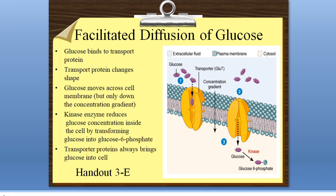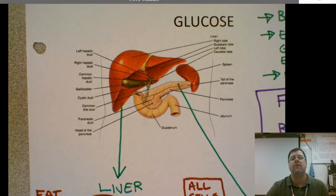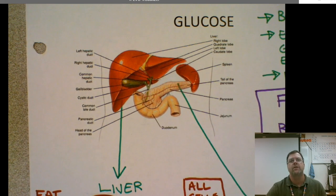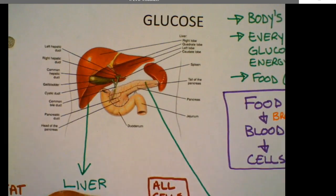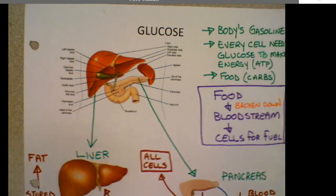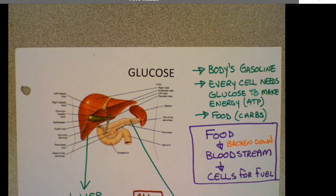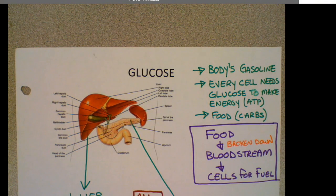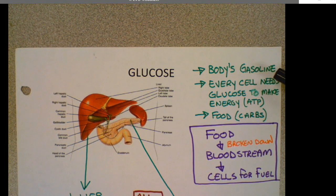That leads us to handout 3E, which is going to introduce us to a couple of hormones regulating glucose in our body. First, I have an introduction to glucose. Here in green, glucose is our body's gasoline — it's our body's fuel, what we burn for energy. Every cell needs glucose to make energy.